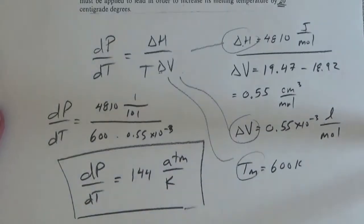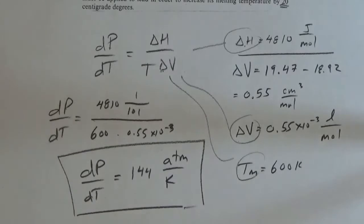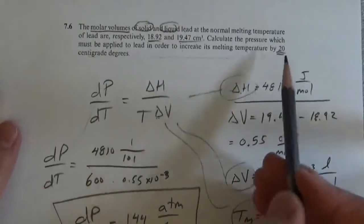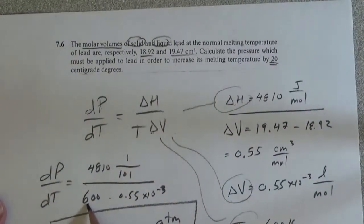And we'll treat that as constant. It's not really, but it's pretty close. There'll be small deviations with small changes, and 20 degrees is not a big change, 20 degrees out of 600.